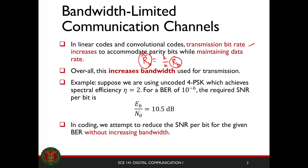If you increase data rate, you increase the bandwidth used for your transmission. For example, suppose we're using an uncoded 4PSK, which achieves a spectral efficiency of 2. For a BER of 10 to the minus 6, the required SNR is 10.5 decibels. But in coding, we attempt to reduce the SNR per bit for the given BER without increasing bandwidth. We don't want to increase bandwidth or waste bandwidth. So if we're using coding and our bandwidth is limited, then we must reduce our data rate.